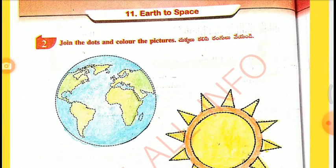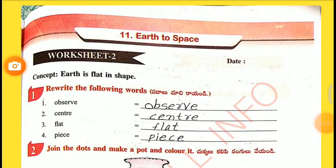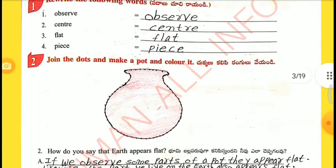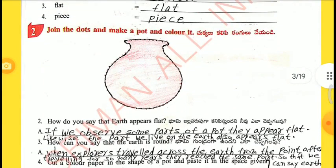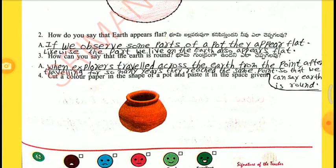Worksheet 2. Concept: Earth is flat in shape. Relate the following words — Observe, Center, Flat, Peace. Join the dots and make a shape and color it. How do you say that earth appears flat? If we observe some parts of the earth, they appear flat. Likewise, the part we live on the earth also appears flat.